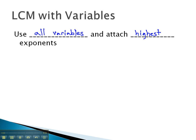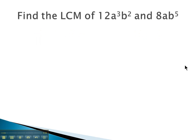Let's take a look at some examples that have variables in them and see if we can identify the least common multiple. In this problem, we're looking for the least common multiple of 12a³b² and 8ab⁵.